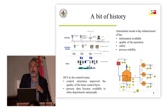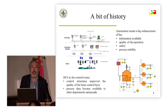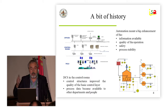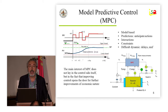If we see how plants have been operated over time, the first big step forward was the introduction of automation — the distributed control systems and so on — which allowed to increase the amount of information available and mainly to stabilize the operation of the plants. With the use of DCS, the control structures improved a lot; it was possible to implement cascade, feed-forward, and many other control structures that improve the operation and stabilize the plants.